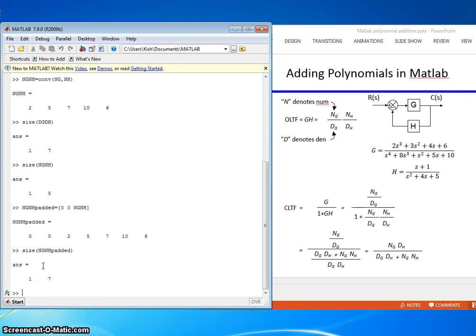Now, we can add the two together. So, den of the closed loop transfer function equals dg dh plus Ng Nh padded. And it added them this time with no error.